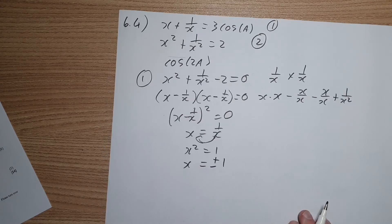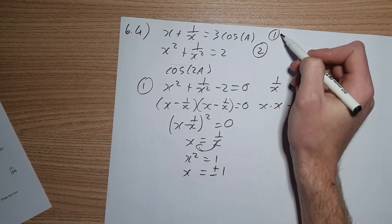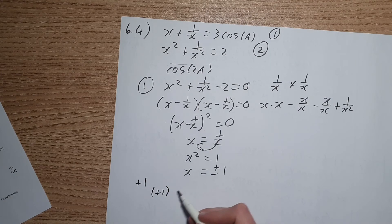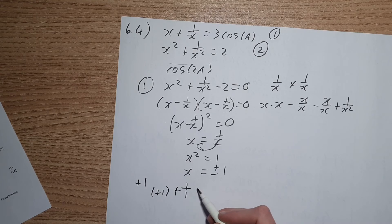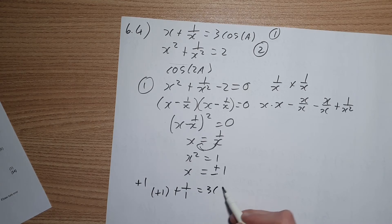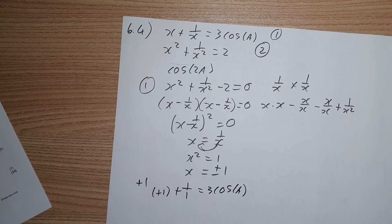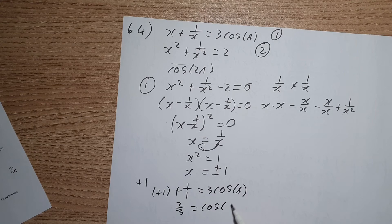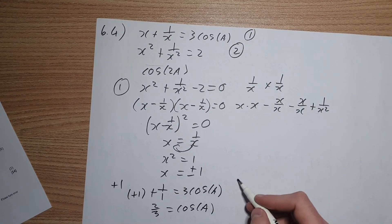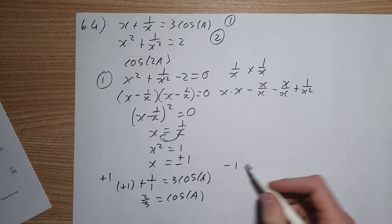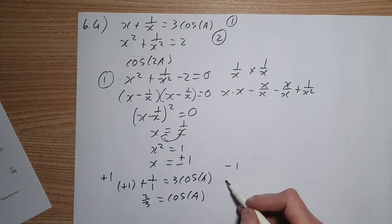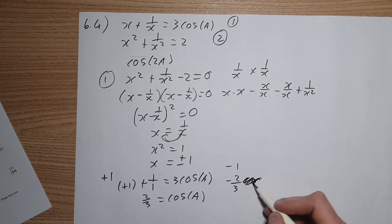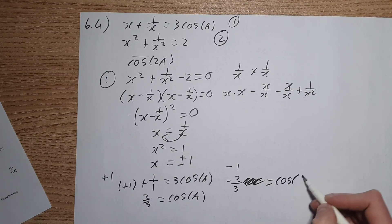So if we substitute that into 1 now, for plus 1, we're going to end up with plus 1 plus 1 over 1 equals to 3 cos of a. That means we're going to end up with 2 over 3 equals cos of a. And if you do for negative 1, you'll see that you're then going to end up getting a negative 2 over 3 equals cos of a.